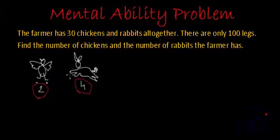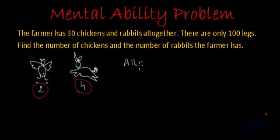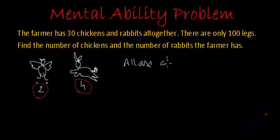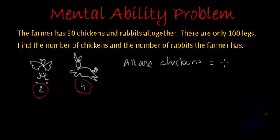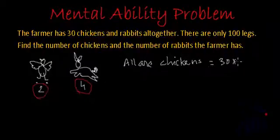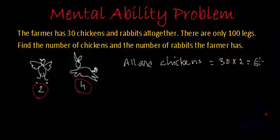Now let's assume that all of them are chickens. If all 30 of them are chickens, how many legs will we have altogether? Each chicken has two legs, so there should be a total of 60 legs.